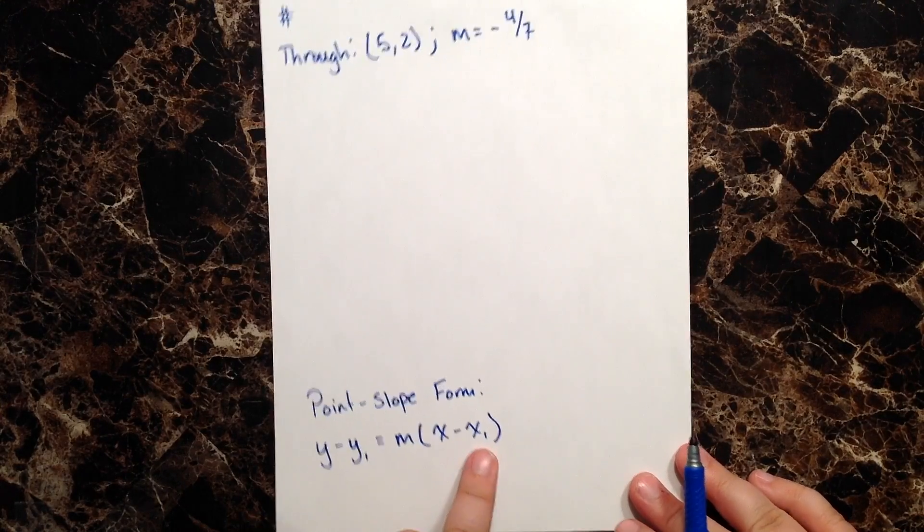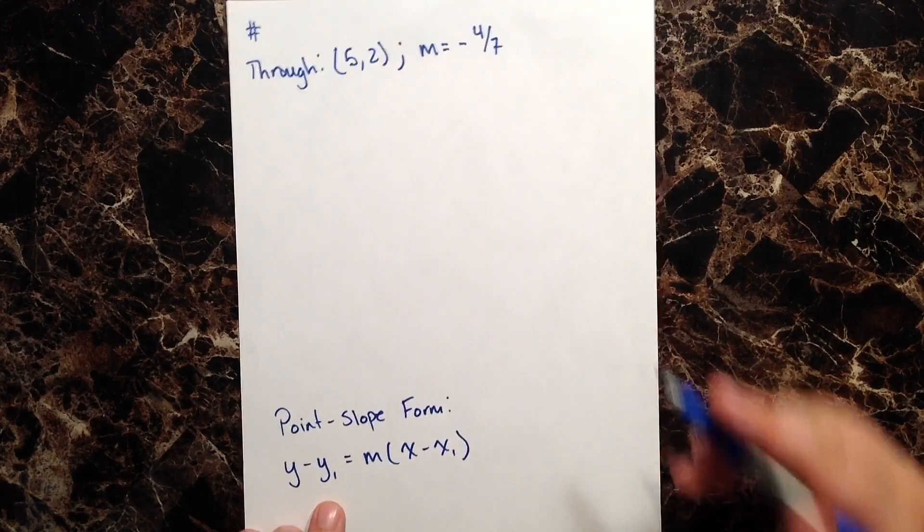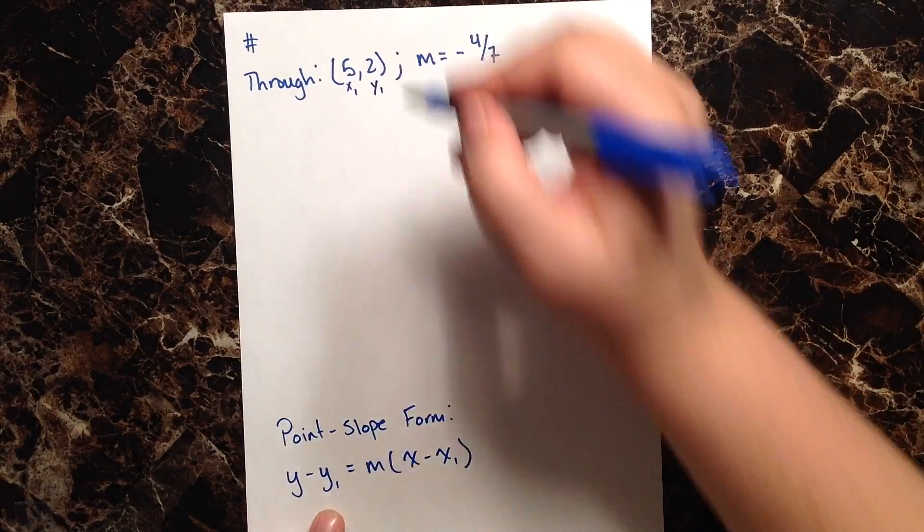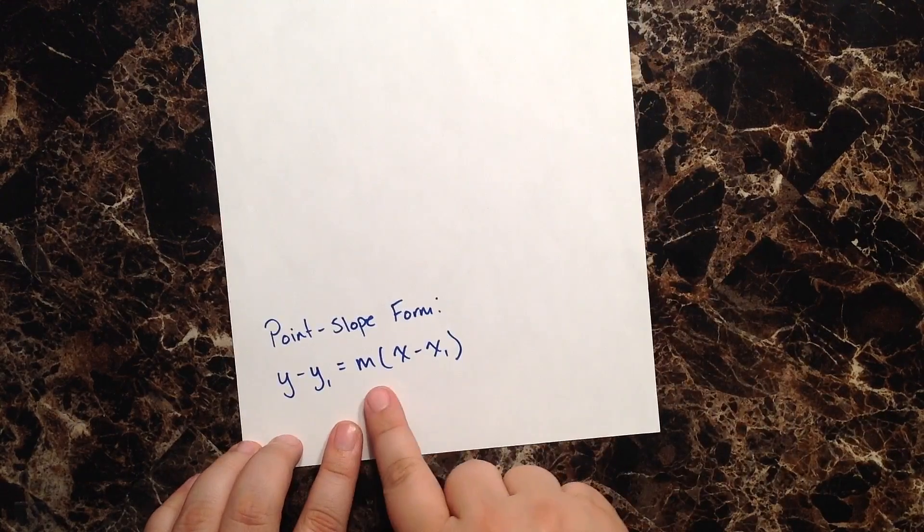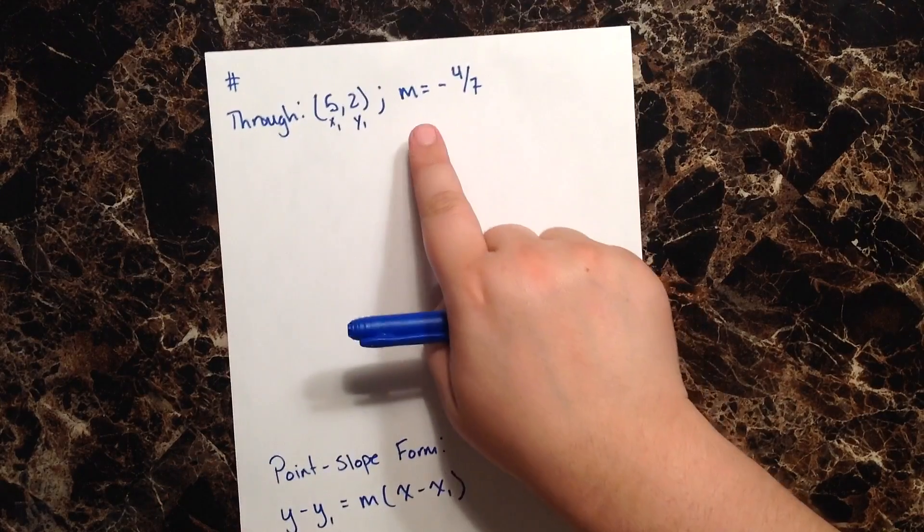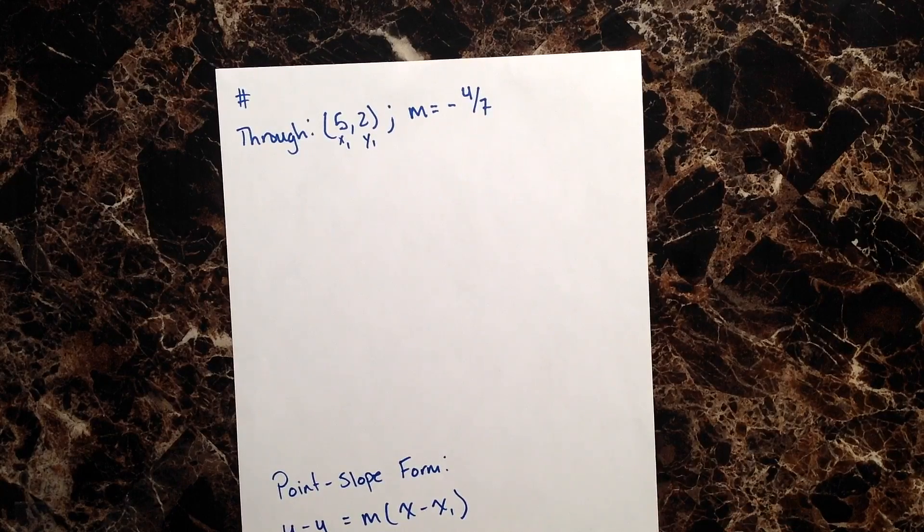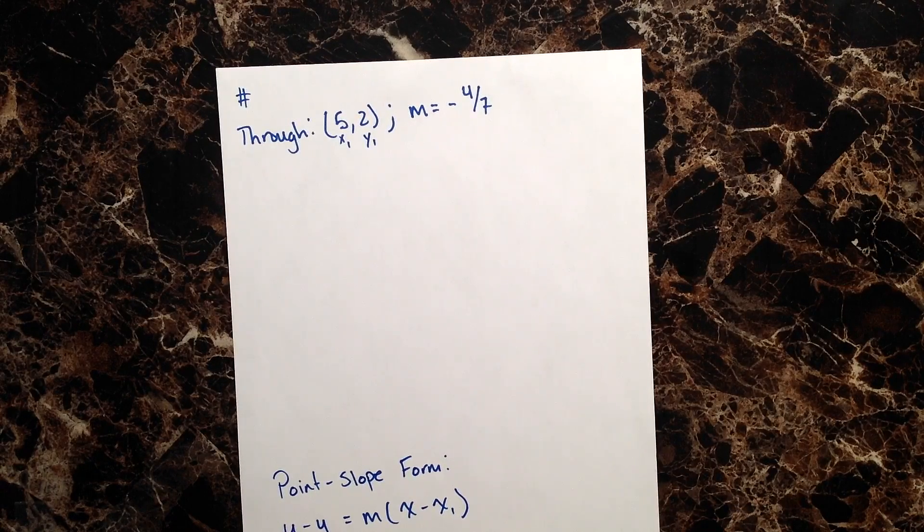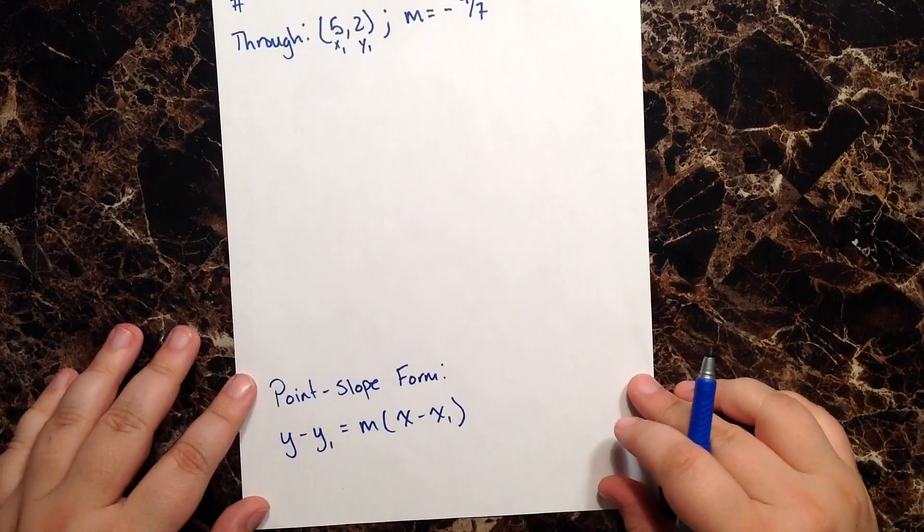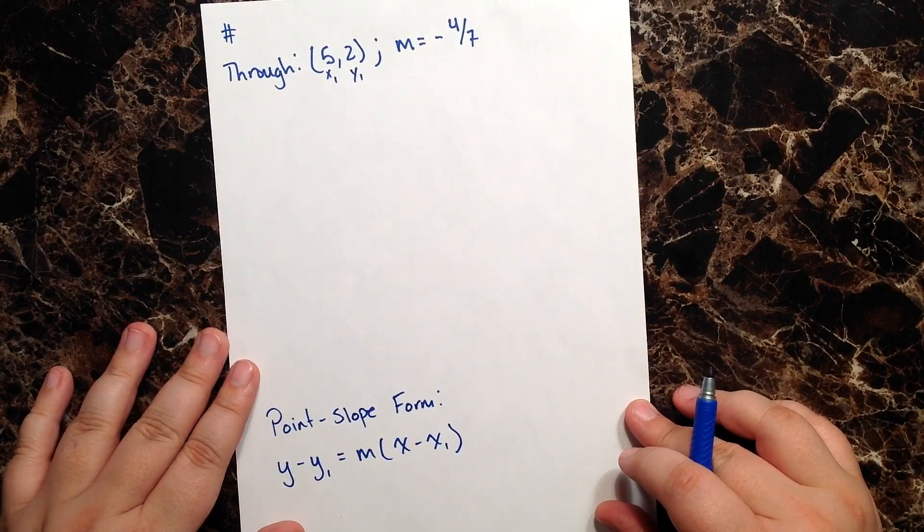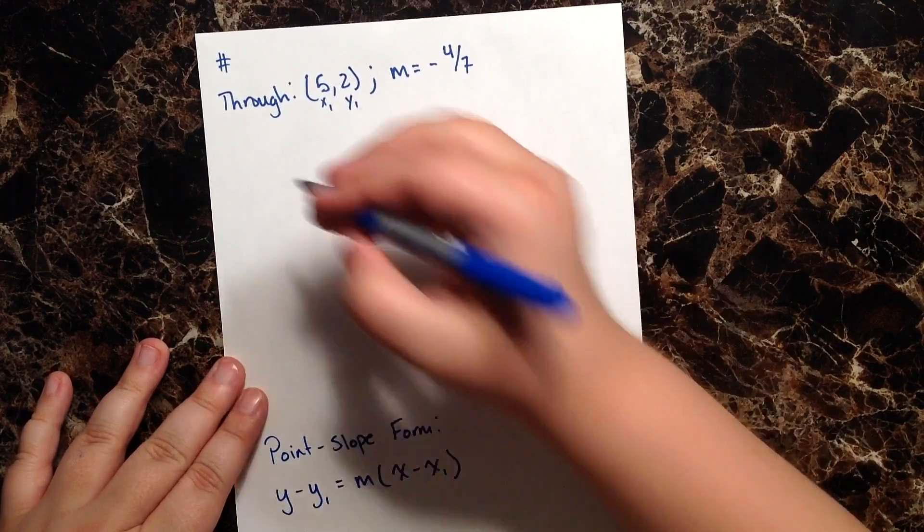And of course, x₁ and y₁ are going to correspond to my point, and the m in my point-slope form simply corresponds to the slope of the line they've given us. So really, all we're going to do is take the given information and plug it into our point-slope form and solve. So let's go ahead and do that.